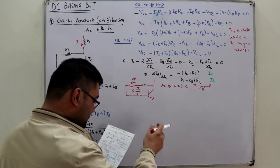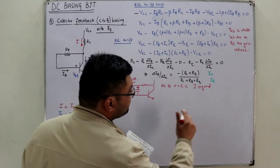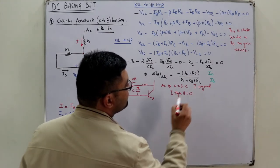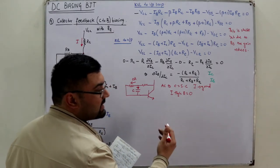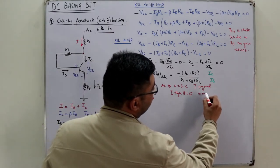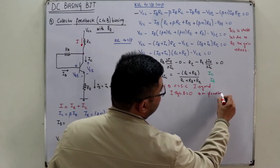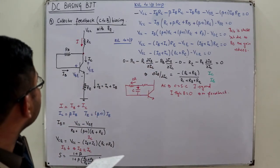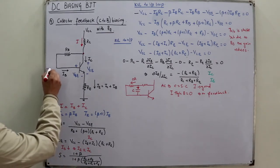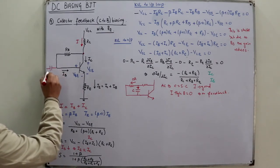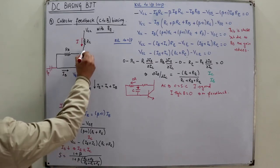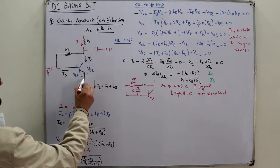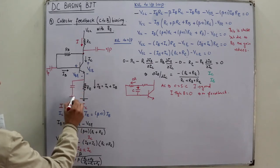With the capacitor in place, in AC analysis the capacitor is short-circuited, so all current flows to ground through it. This means zero current enters the base through the feedback path, effectively eliminating the feedback. So installing a capacitor removes the feedback phenomenon. You may also have a bypass capacitor connected in parallel with RE.